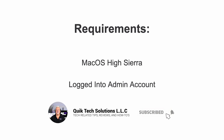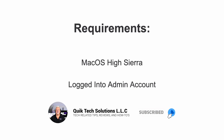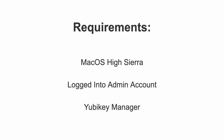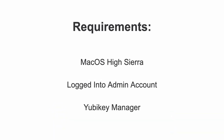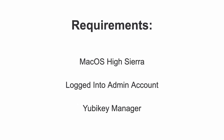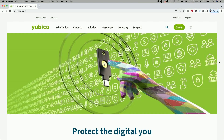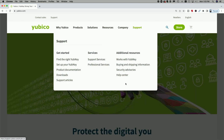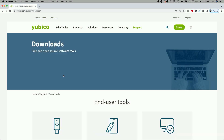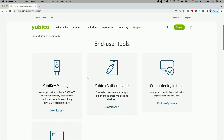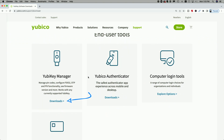So there were three requirements in order to get this done successfully. First, you have to be running Mac OS High Sierra or later. You have to be logged into an admin account when configuring this, and you need to install a program called the YubiKey Manager. I've already installed this program, but you can go ahead and download it from the YubiKey.com website. I'll put a link down in the video description.